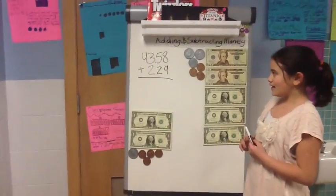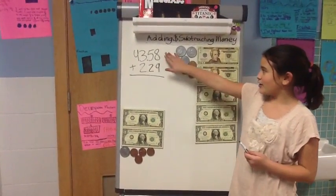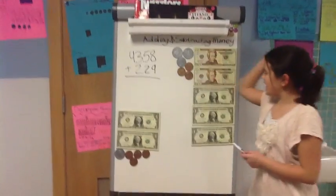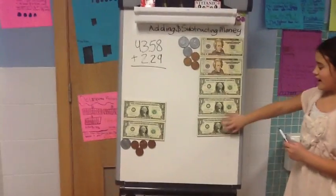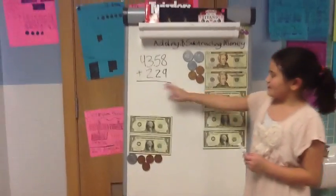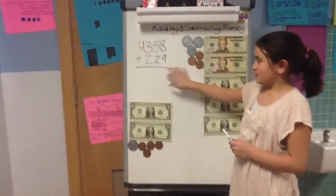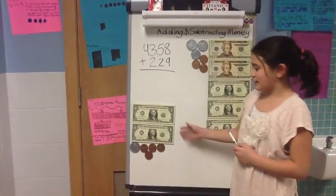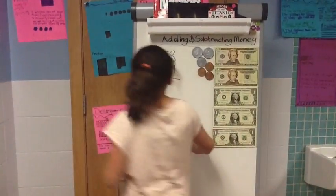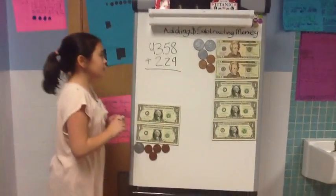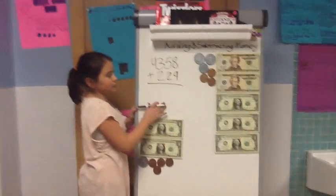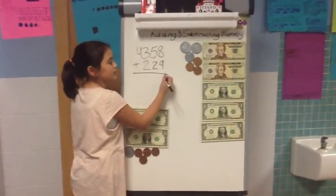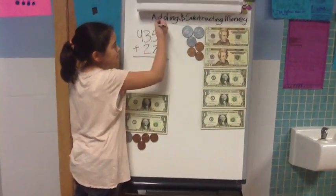Today I'm going to show you how to add $43.58, which we have here in money, and $2.29, which we also have here in money. First we start with our coins. We do 8 plus 9, which equals 17.